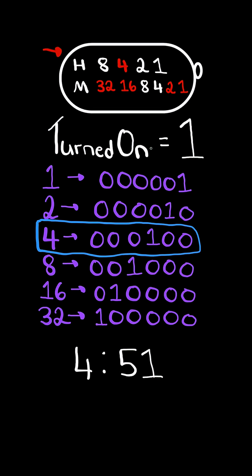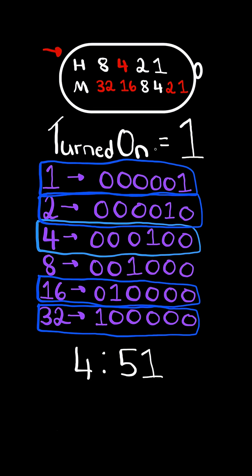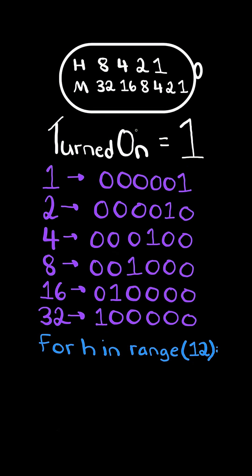Similarly, if we count the number of set bits in the binary representation for the hour and add that to the set bits for the minutes, the total would equate to the total LEDs being turned on—in this case, 5.